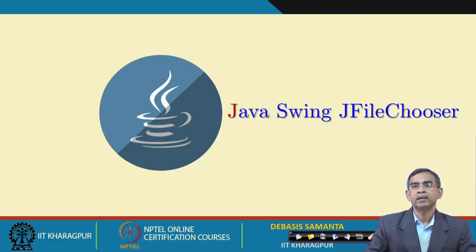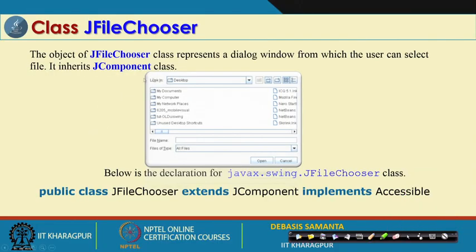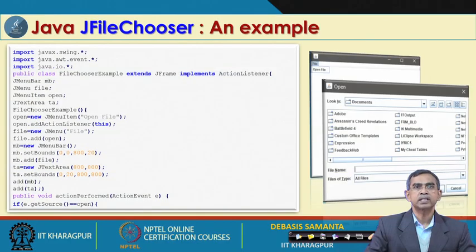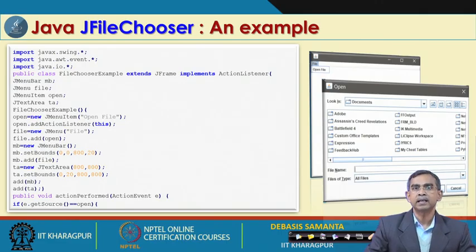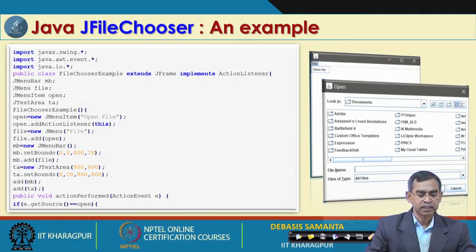JFileChooser is preferred when developing a file management system program. It lists files in the current directory, displays them, and allows generating events by selecting a file — saving, copying, or opening it. It has 4 constructors. In the example, different folders are included and whatever files exist in a folder will be displayed. If you specify a different directory, the files from that directory will be shown automatically.